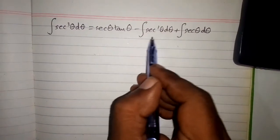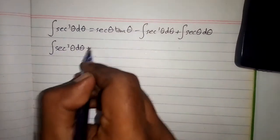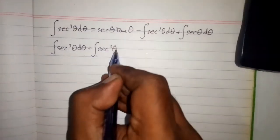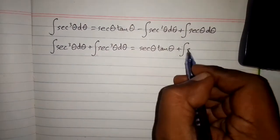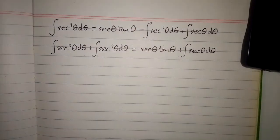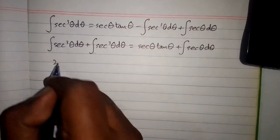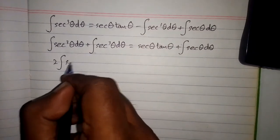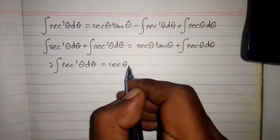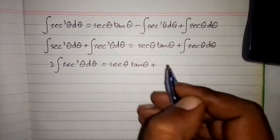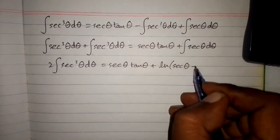We take the integral of sec cubed θ to the other side. So we have 2 times the integral of sec cubed θ dθ equals sec θ tan θ plus the integral of sec θ dθ. Since the integral of sec θ is ln|sec θ + tan θ|, we arrive at this combined equation.